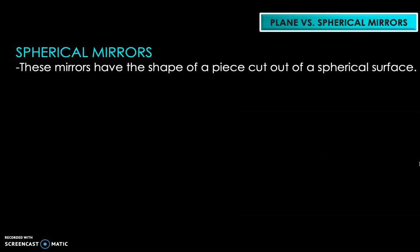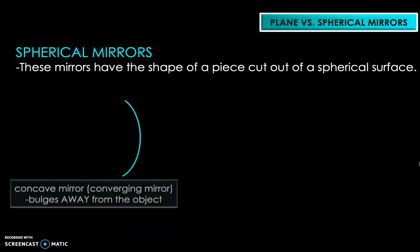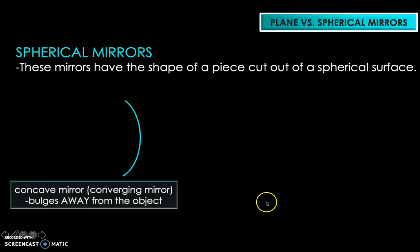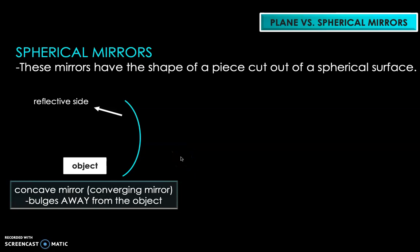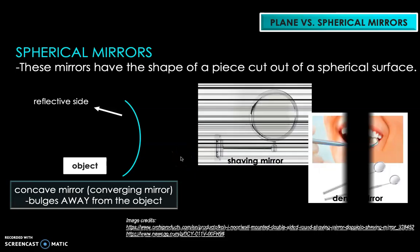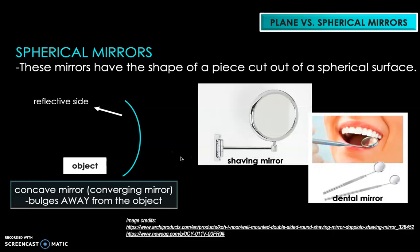Contrary to plain mirrors, spherical mirrors look like they had been cut off from a spherical surface. The first type is the concave mirror, which bulges away from the object — the reflective side faces the object. Examples of concave mirrors are shaving mirrors and dental mirrors, which are both capable of magnifying images.